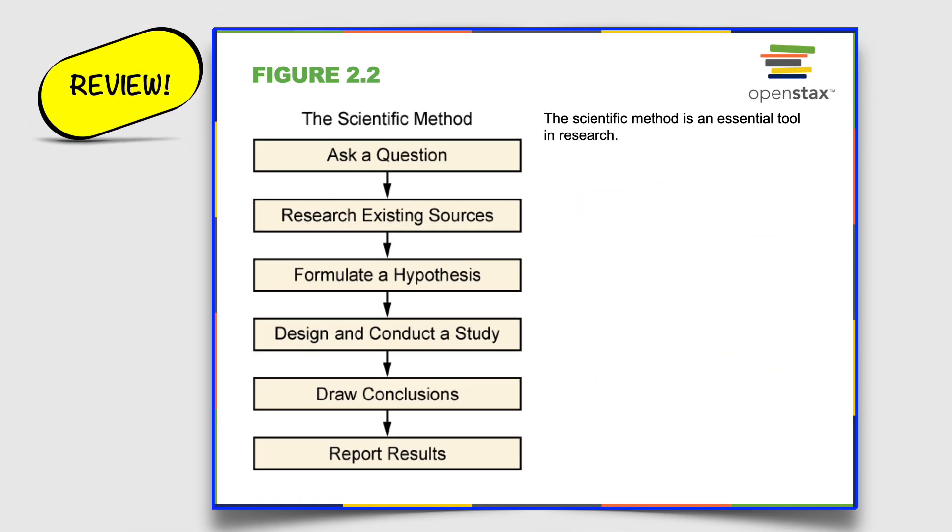As a review, here are the six steps to a research project or the scientific research method. Step one, asking a question. Step two, researching existing sources. Step three, formulate a hypothesis. Step four, design and conduct a study. Step five, drawing your conclusions. And then lastly, reporting those results and hopefully bringing about some positive change.